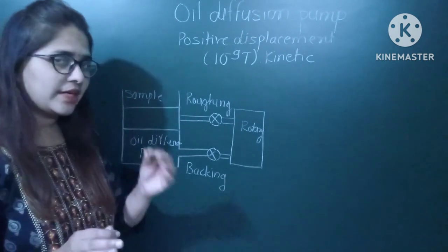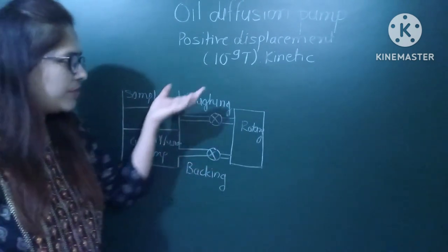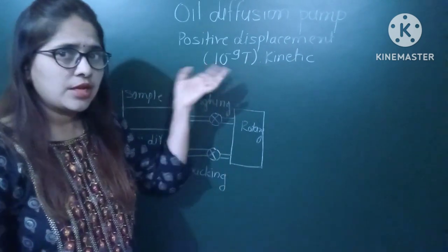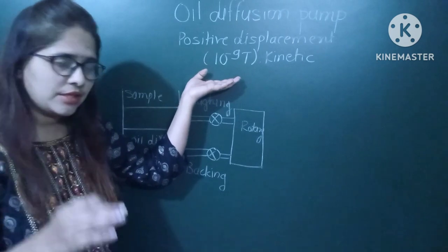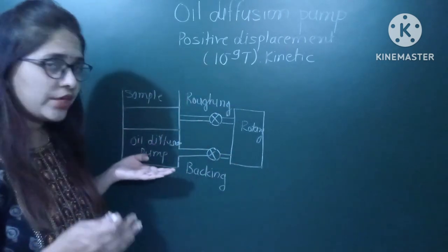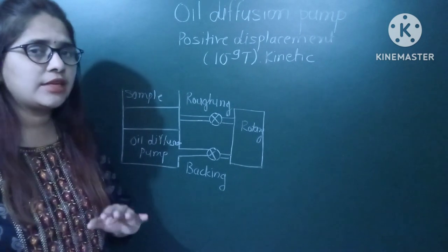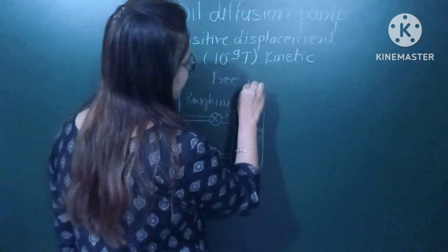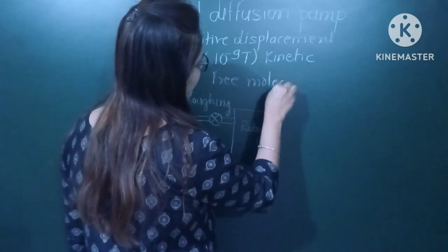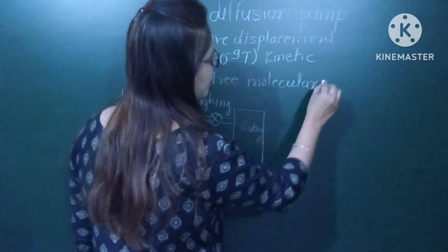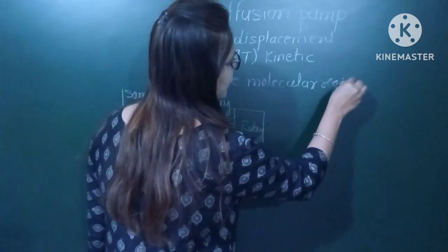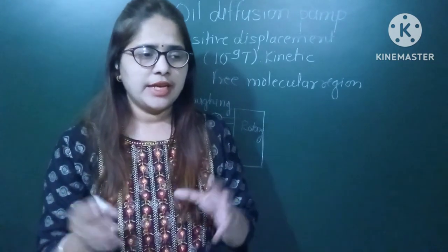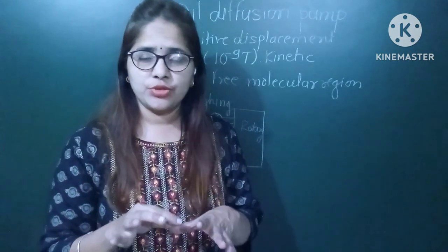First we need to know that this oil diffusion pump is going to give us a vacuum of nearly 10⁻⁹ torr. To attain this vacuum, the oil diffusion pump works in a pre-molecular region. Now, what is this pre-molecular region?